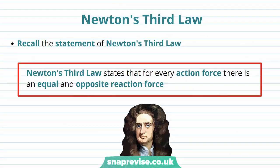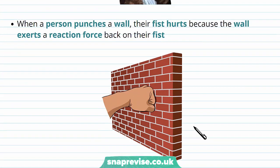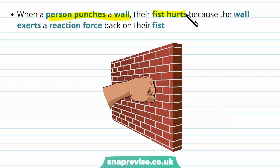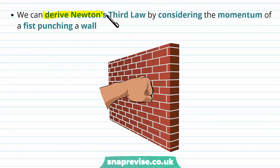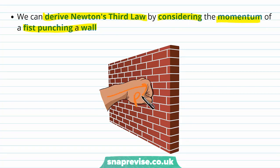We can use the principle of conservation of momentum to explain Newton's third law. Newton's third law states that for every action force there is an equal and opposite reaction force. For example, when a person punches a wall, the wall exerts a reaction force back on their fist — that's why it hurts. We can derive Newton's third law by considering the momentum of a fist punching a wall. When a fist punches a wall it has a certain momentum P because it's moving with a mass and velocity.